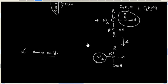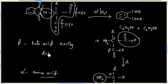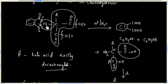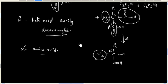This decarboxylation happens easily because beta-keto acids easily decarboxylate. On the beta position we have a keto group, and the nitrogen will come with this carbon, so we will have an amino acid that contains an acid group and an amino group at the alpha position. So this is an alpha amino acid, and this is a method of preparation of alpha amino acid.